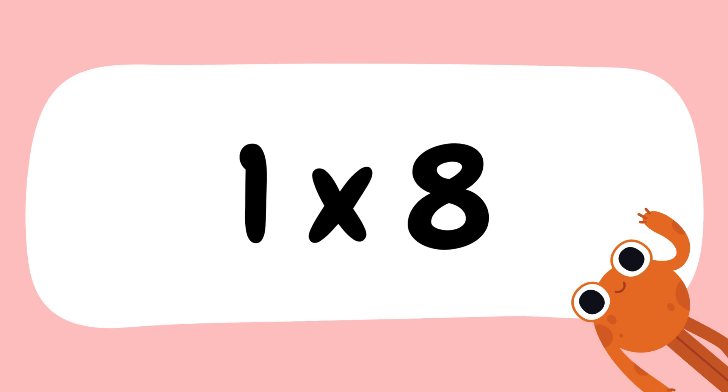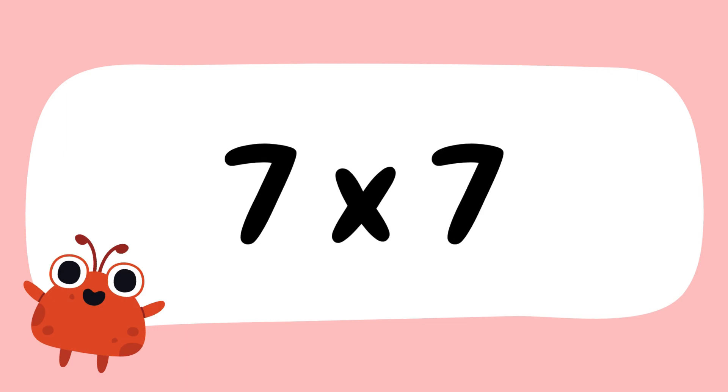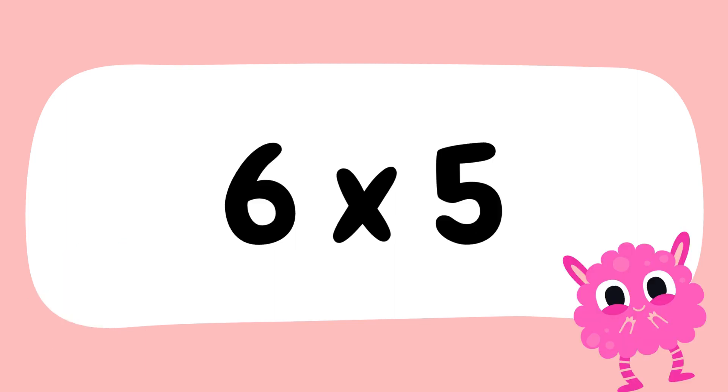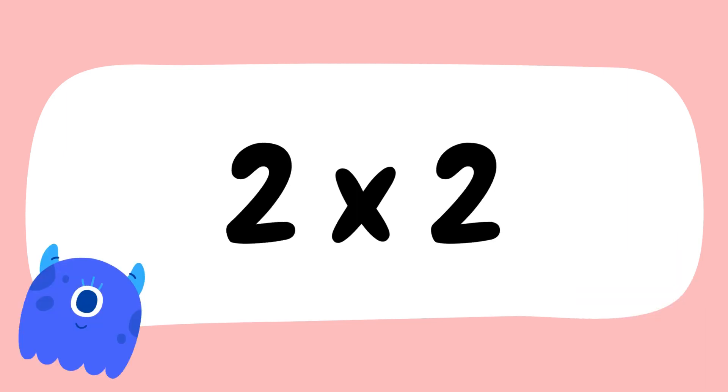Next is 6 multiply by 5. 6 multiply by 5 is equal to how much? 30.